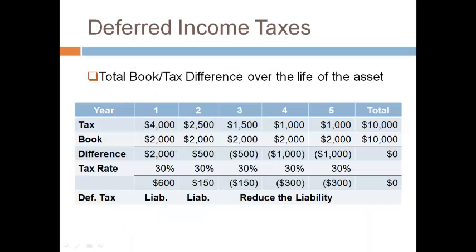Comparing the tax depreciation each year to the book depreciation gives the book-tax difference. The book-tax difference multiplied by the tax rate is the deferred tax liability. The tax deduction is greater, which means that less tax will be paid in the first year. If less tax is paid in the first year, then more tax will have to be paid in future years to get to equal for all years.